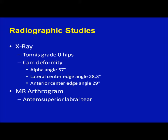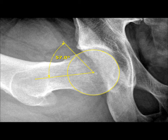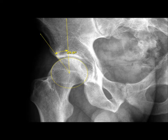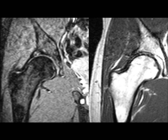Plain radiographs demonstrated Tonnis grade 0 hips with cam deformity. The alpha angle was 57 degrees, the lateral center edge angle 28.3 degrees, and the anterior center edge angle 29 degrees. A magnetic resonance arthrogram revealed an anterior superior labral tear and a discrete OCD lesion in the superior lateral portion of the acetabulum.